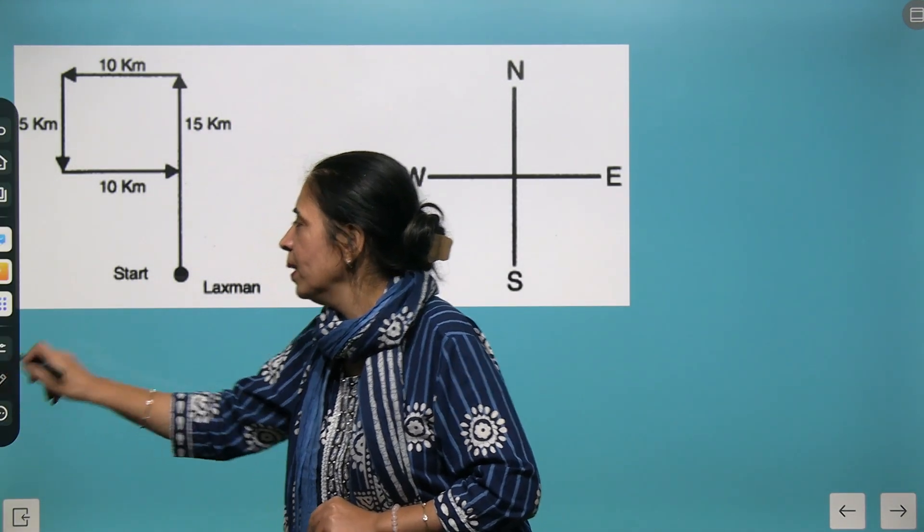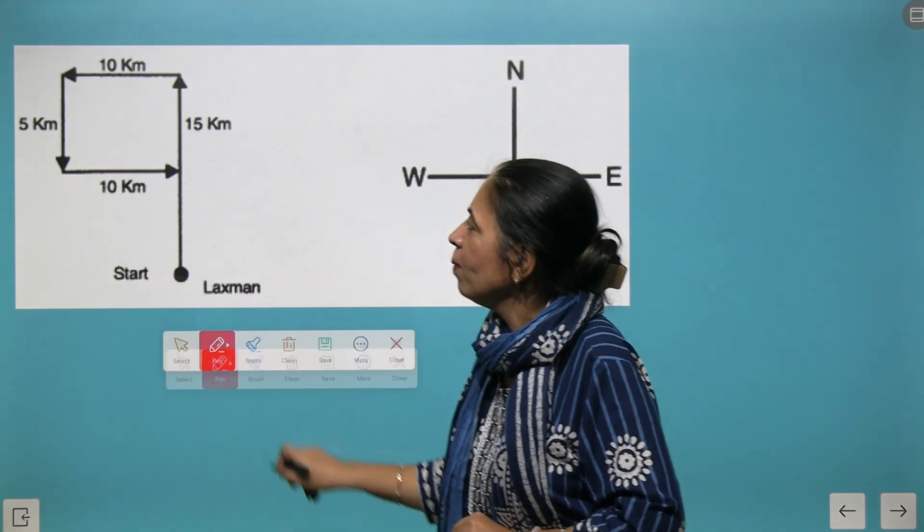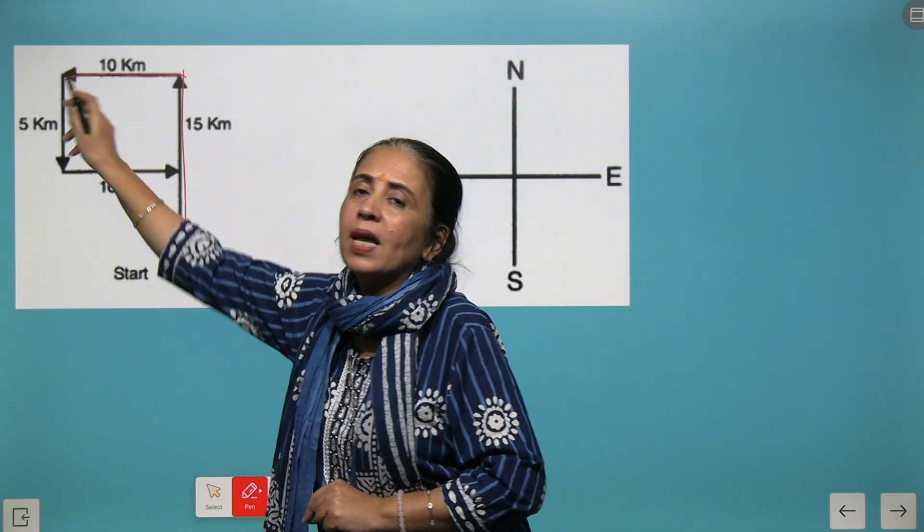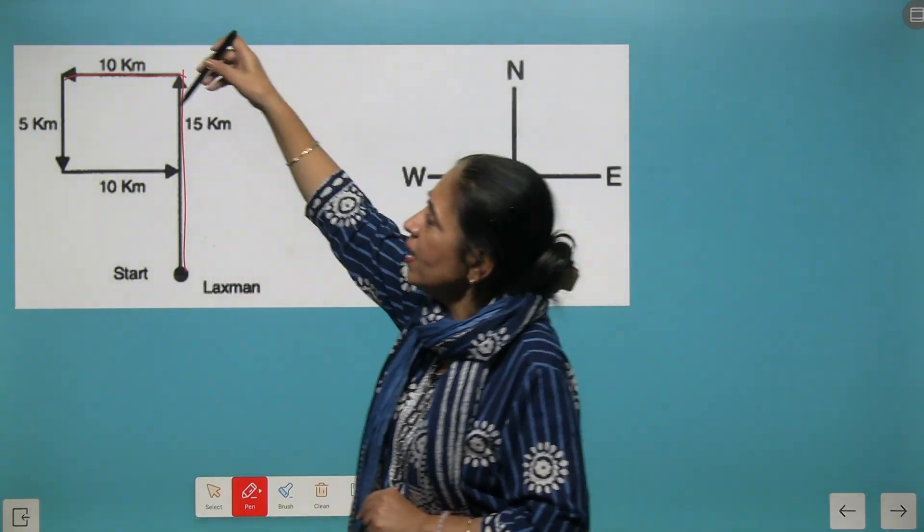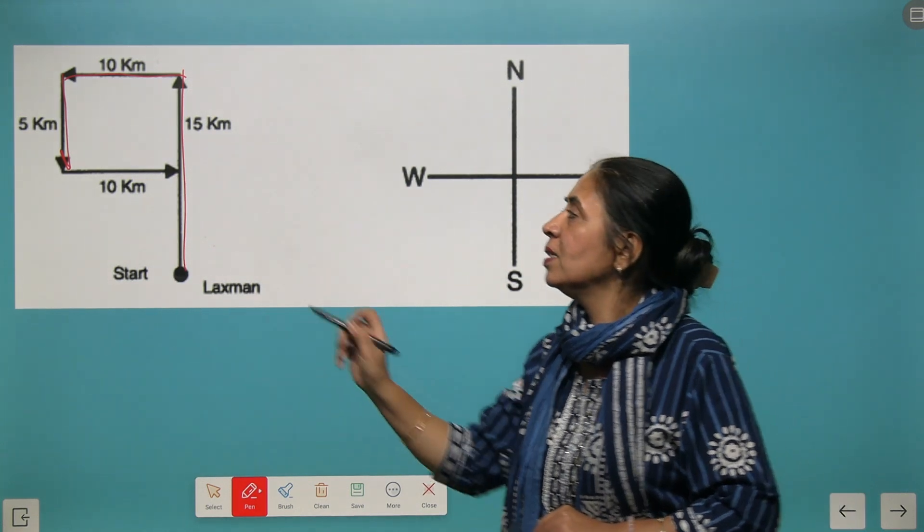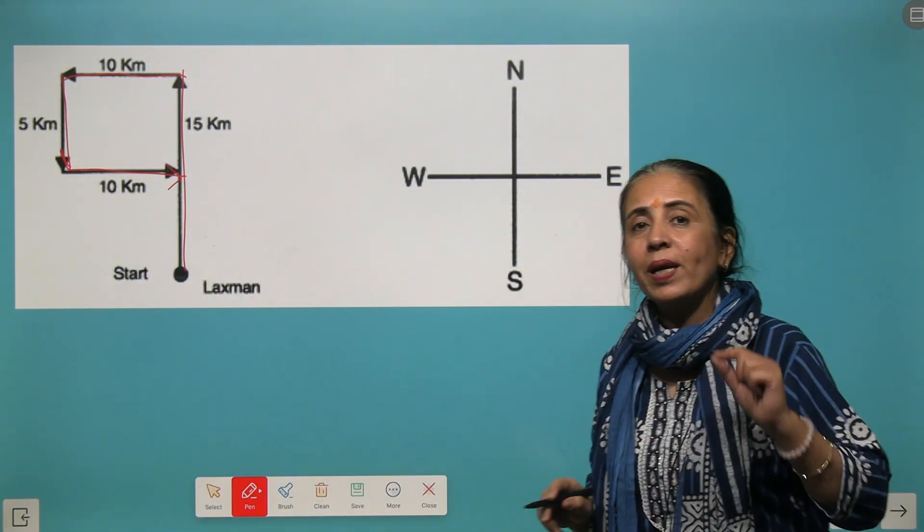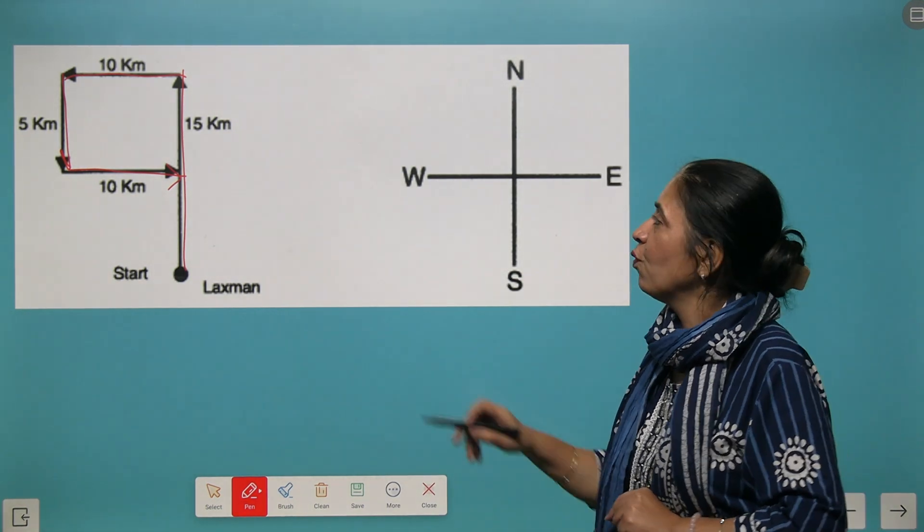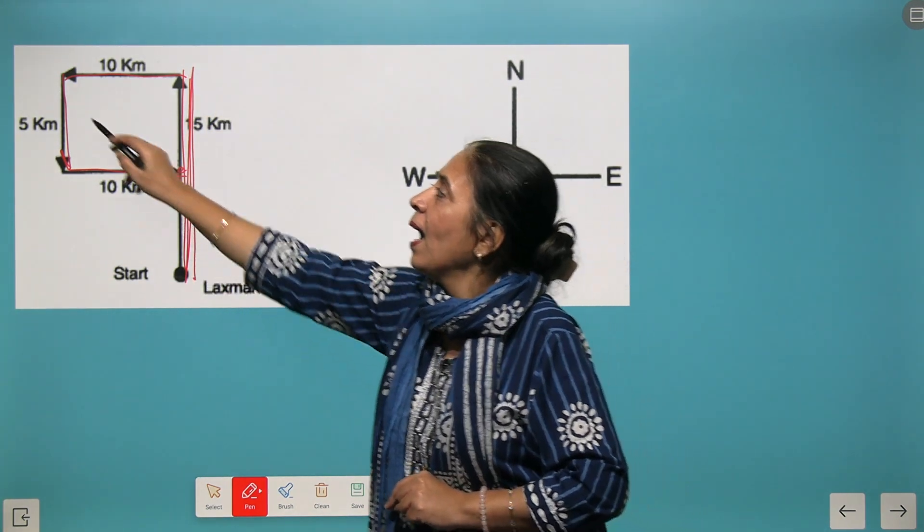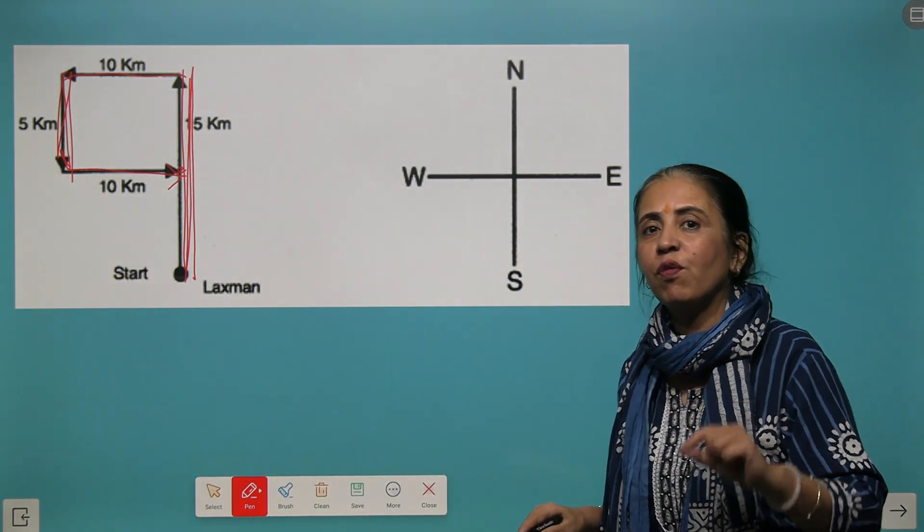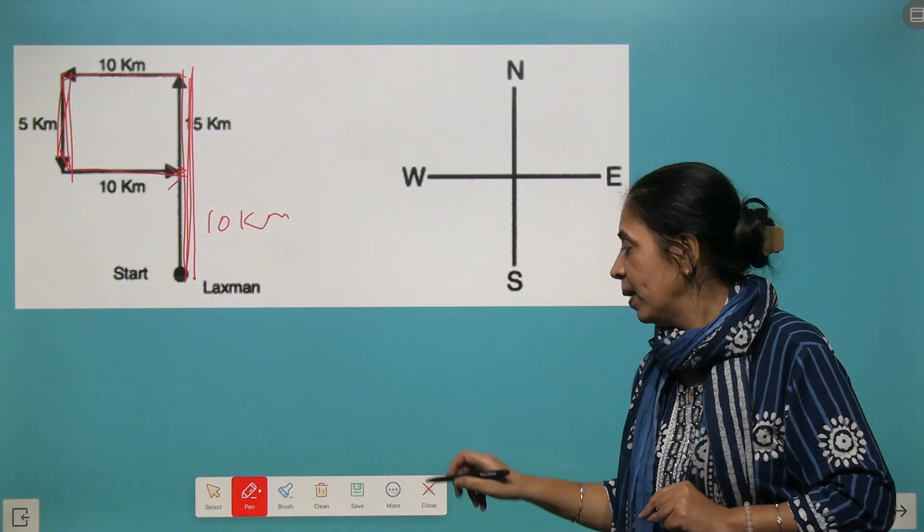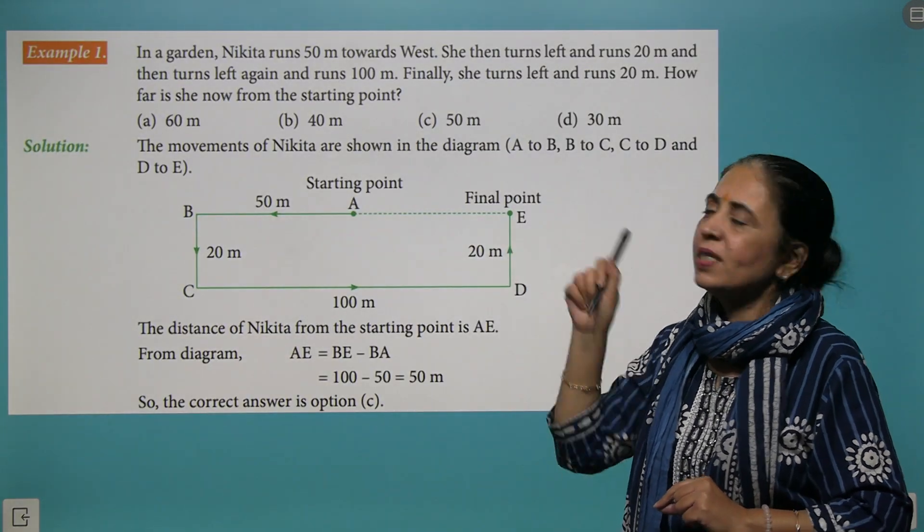Let's take another example. Lakshman starts from this point and moves 15 kilometers towards north, then 10 kilometers towards west. Then he turns towards south and moves 5 kilometers, then turns to east and moves 10 kilometers. The question is: how far is he from the starting point? The total distance is 15 and this is 5, so we find the difference: 15 minus 5. He is just 10 kilometers away from his starting point.